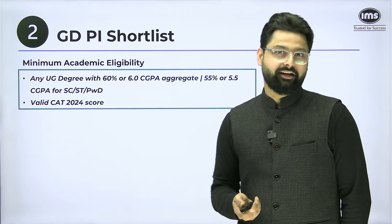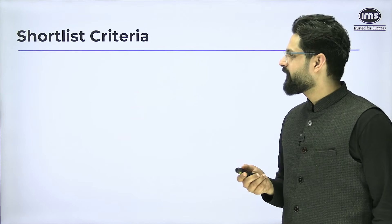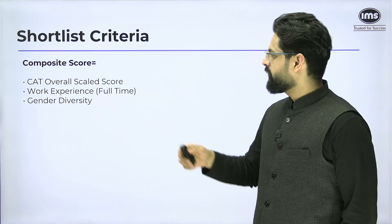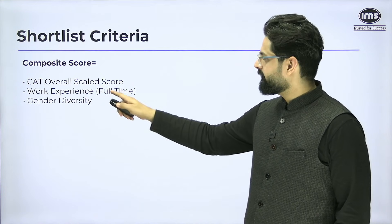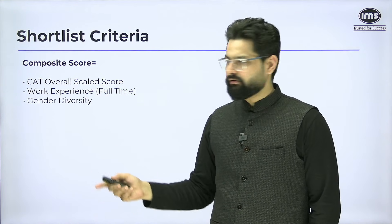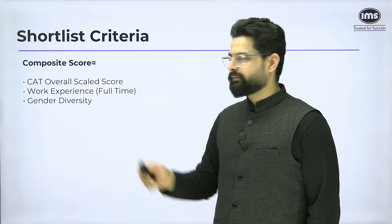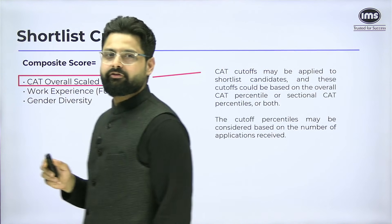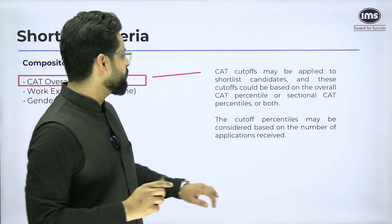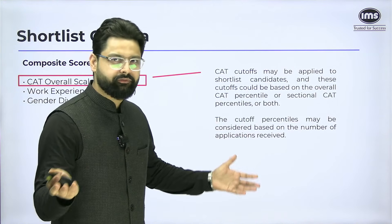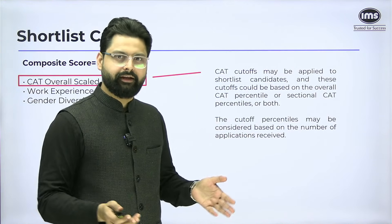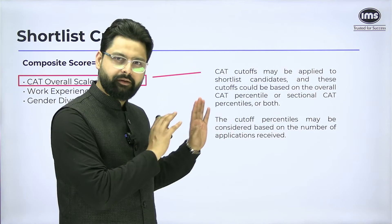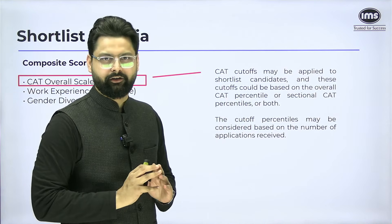You should definitely have a valid CAT 2024 score. The shortlist is decided on three aspects: CAT overall scaled score, work experience, and gender diversity. Regarding the CAT overall scaled score, no specific cutoff details have been given — they may apply overall or sectional cutoffs, but these will be decided based on how many people apply.